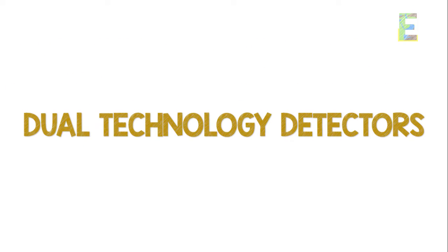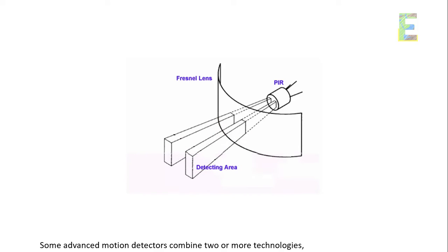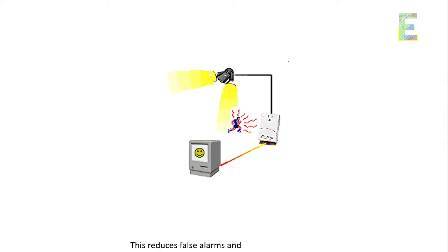Dual technology detectors. Some advanced motion detectors combine two or more technologies, such as PIR and microwave. This reduces false alarms and enhances accuracy.